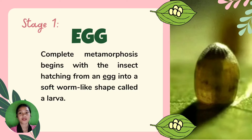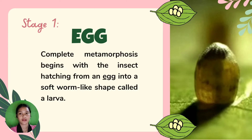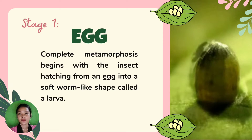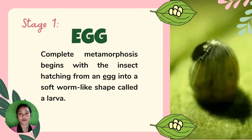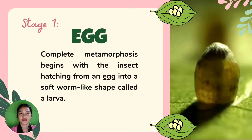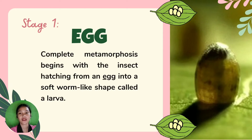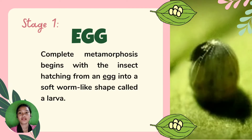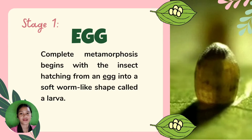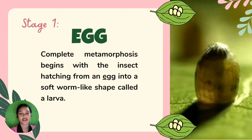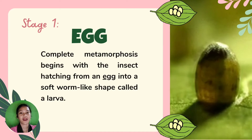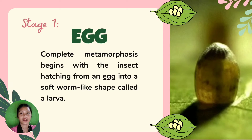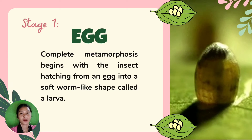We have here Stage 1: the egg. The female lays the egg on the leaves or stems of a plant. Inside these tiny eggs grows a caterpillar, or larvae. Different species have different shape and textured eggs. Some eggs will hatch after a few weeks, and others when the weather is warm enough.